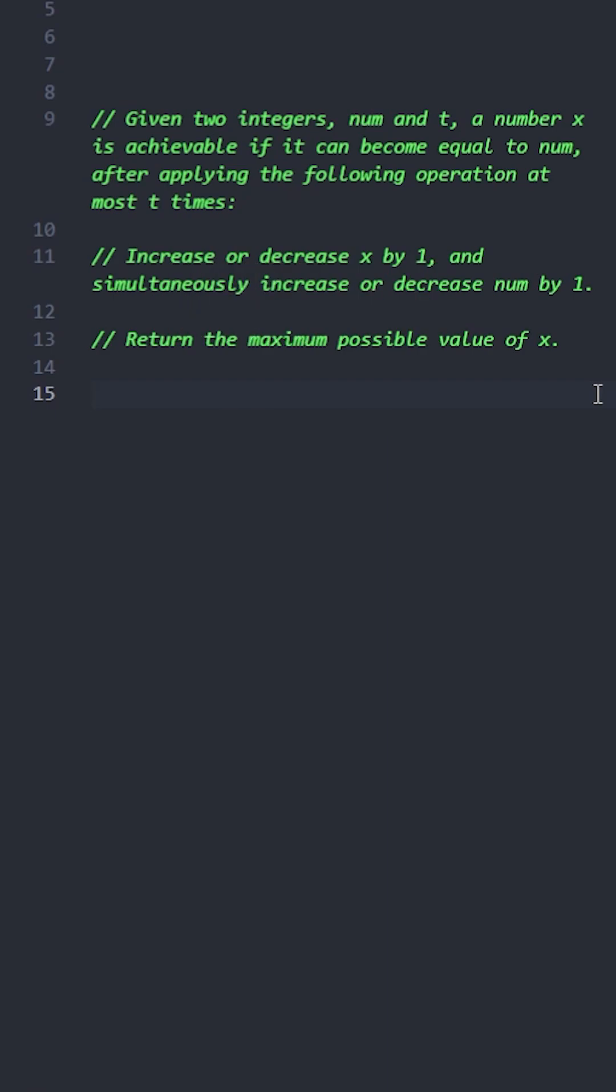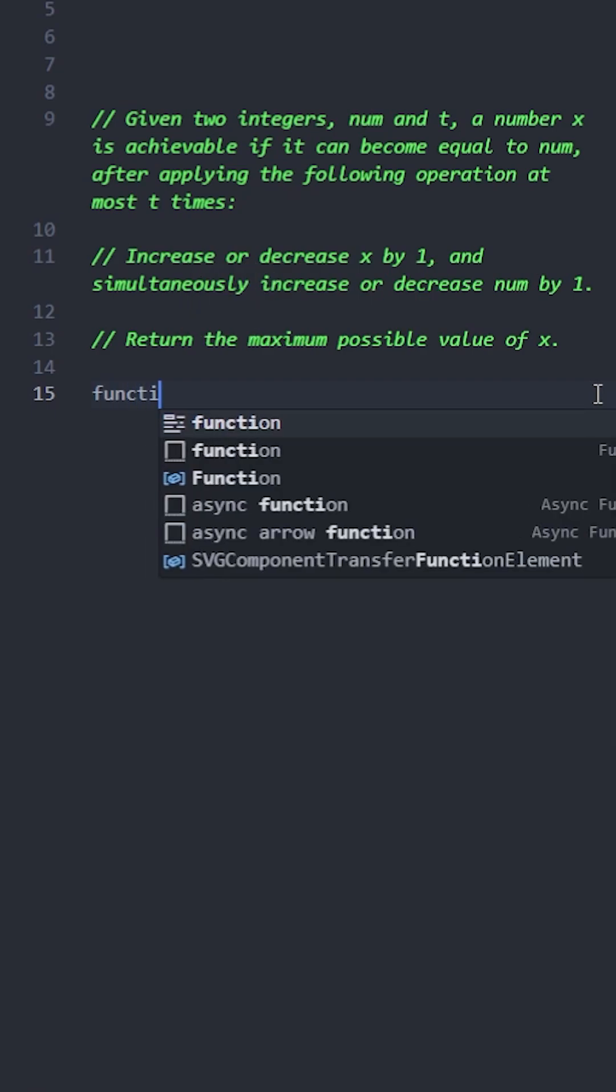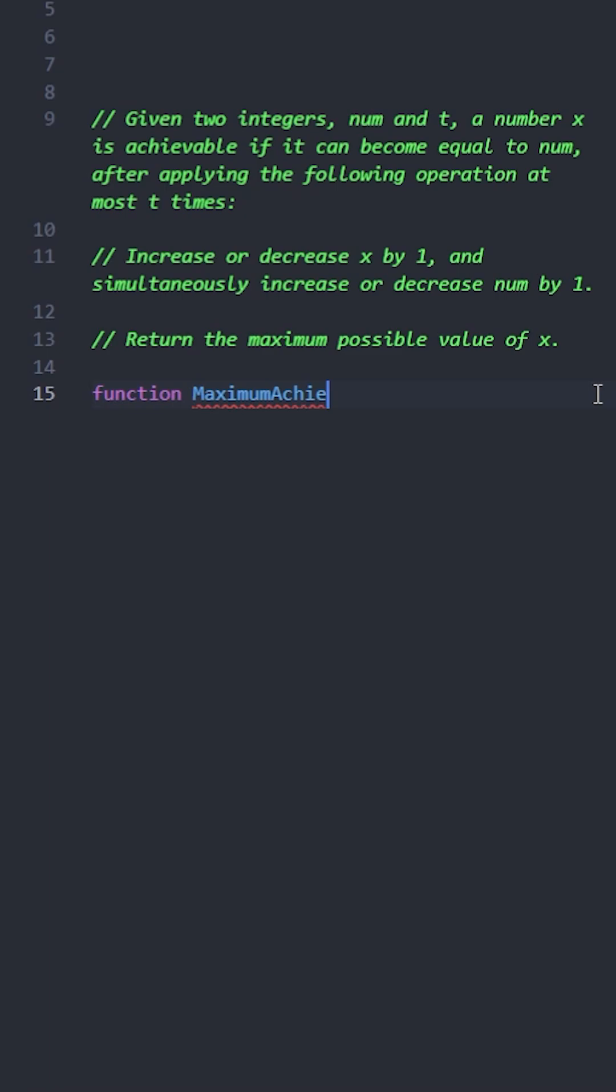Now let's implement the solution. Since we want the maximum possible x and we know the maximum allowed gap is 2 multiplied by t, the formula looks like this.